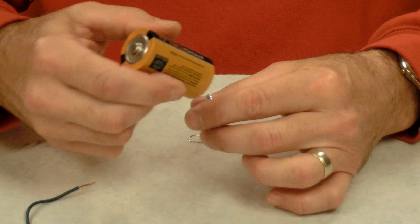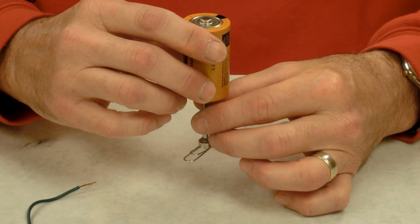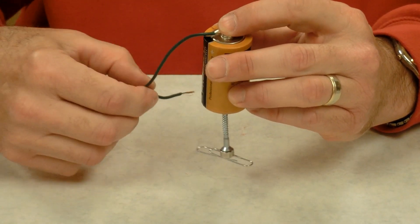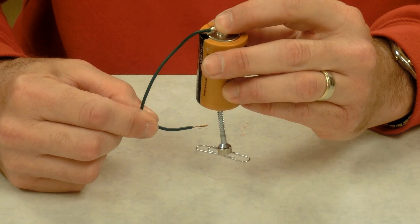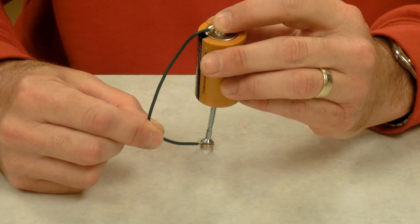So if I flip my battery over and I connect the screw to the negative instead of the positive, now current will flow the opposite direction which will make the magnet spin counterclockwise this time. And there it goes.